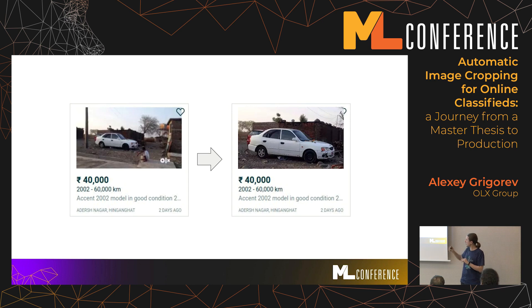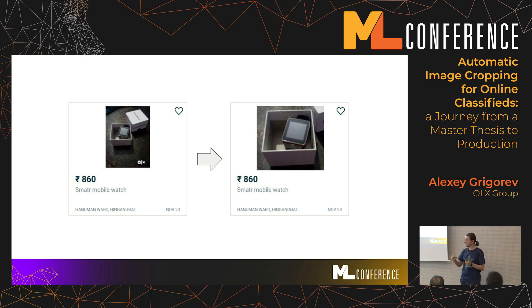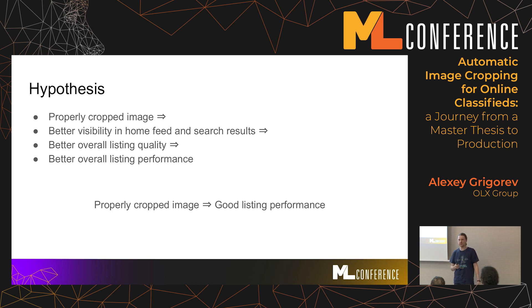Another example: the car is also somewhere in the center, with a lot of background. It would be nice to crop it all out and only focus on the car itself. There are many examples where people don't think this is important, but for buyers, when they come onto the platform and see something like this in the home feed or search results, it's difficult for them to see what is there. So they often don't click on these things. The hypothesis we wanted to test is that if we have a properly cropped image, then it leads to better visibility, people click more often, and at the end, people buy or sell things faster.